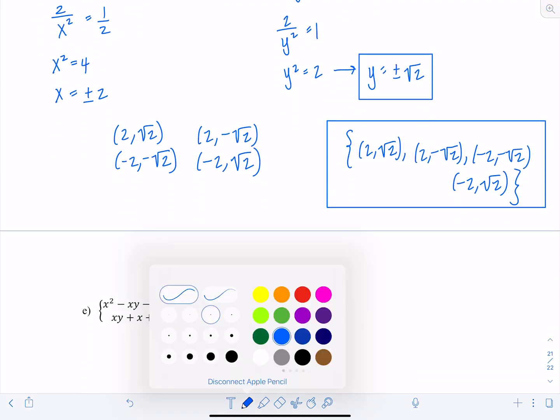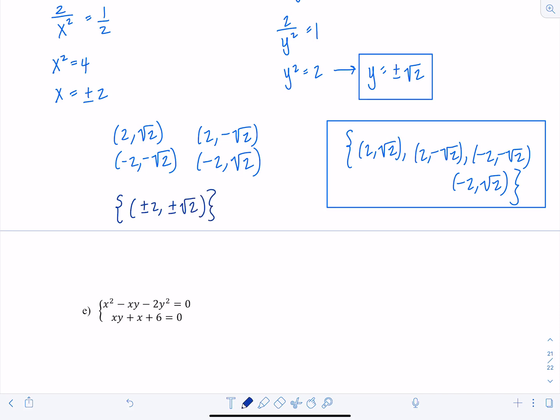Technically, you would be able to write plus or minus 2 and plus or minus root 2, since there were all four combinations. But if you only had the positives together and the negatives together or some other weird combo, if you didn't have all four possible pairings, then you couldn't do this notation. But in this case, because we had all four options as part of our solution set, that's fine.